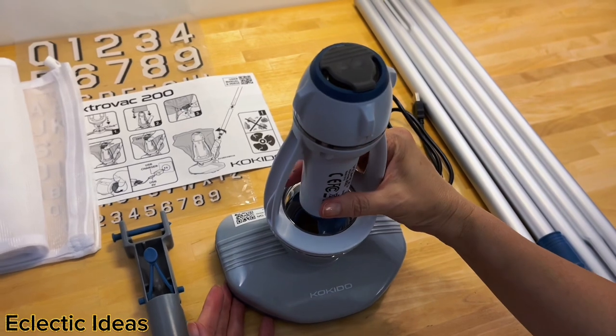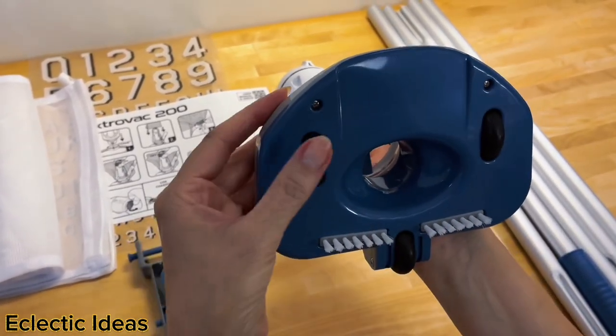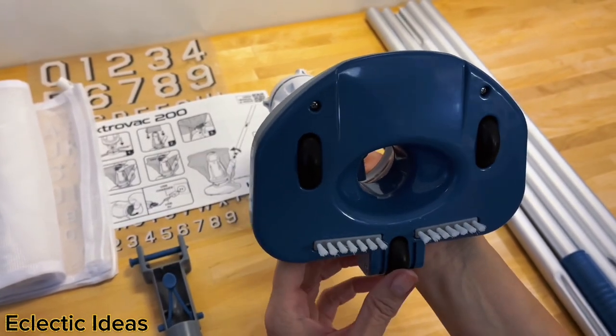Let's go ahead and flip it upside down. We can see this wide mouth that accepts up to three inches worth of leaf debris, the wheels, and the bristle brushes that help you clean.